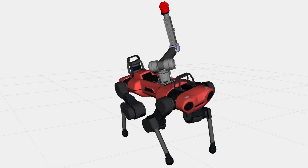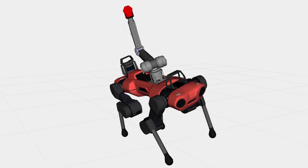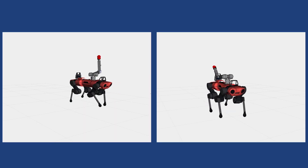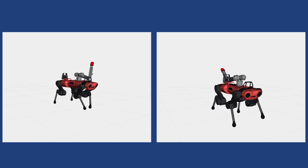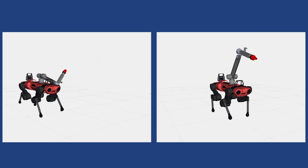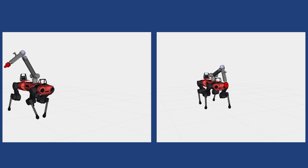Then lifting the left foreleg. A similar but more dynamic behavior can be perceived by commanding the robot in trot mode with high accelerations in the lateral or longitudinal direction.